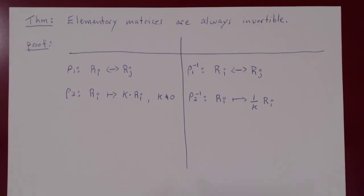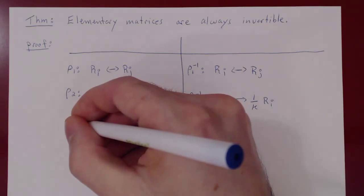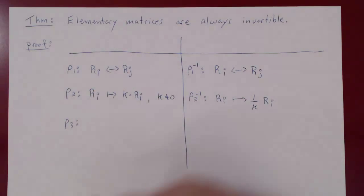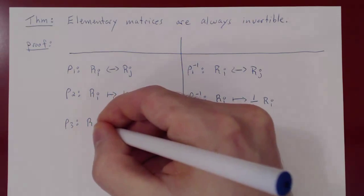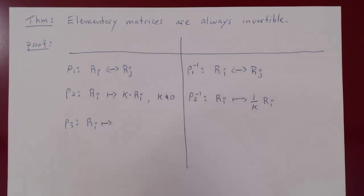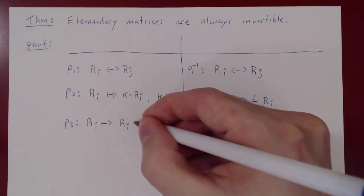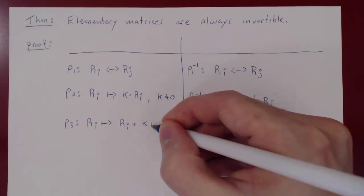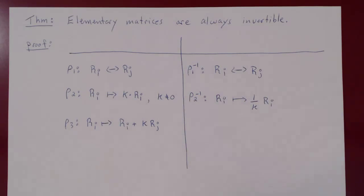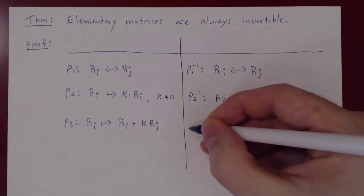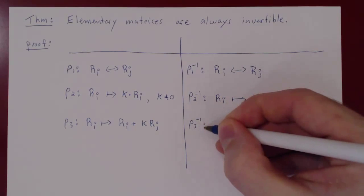And finally, the third type of row operation. This is taking a row, say row i, and transforming it by taking row i and adding to it a multiple of another row. So row i plus k row j. How could you undo this operation? How could you invert it?